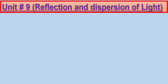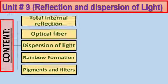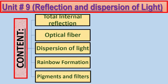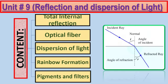Dear students, unit number 9 is on reflection and dispersion of light. In this unit we will discuss today: total internal reflection, optical fiber, dispersion of light, rainbow formation, and pigments and filters.